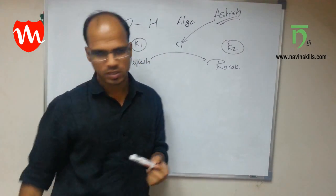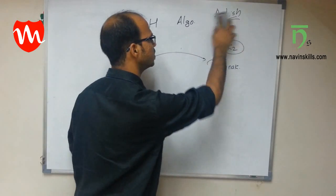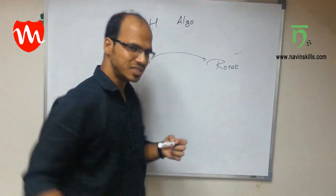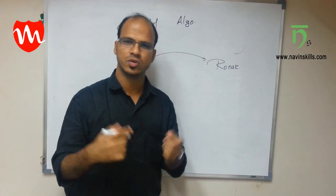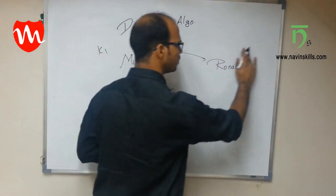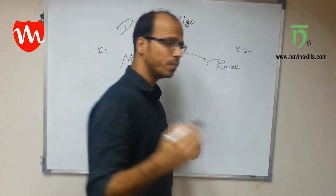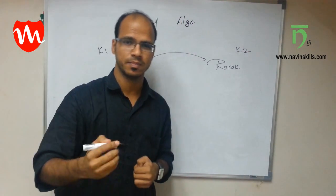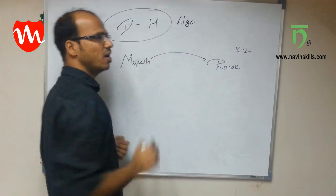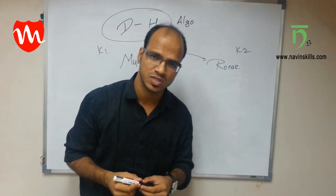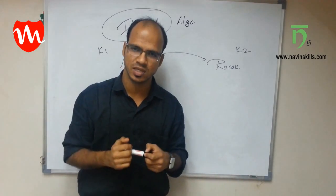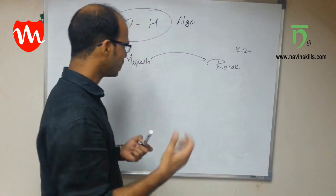We need to exchange these keys in such a way that no one else can find out. Mukesh will generate a key K1 and Ronak will generate a key K2, and both keys should be the same. To achieve this, we use an algorithm called the Diffie-Hellman algorithm, which allows both parties to create and exchange keys securely.